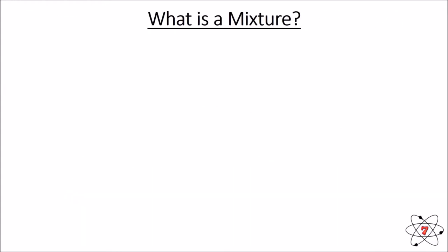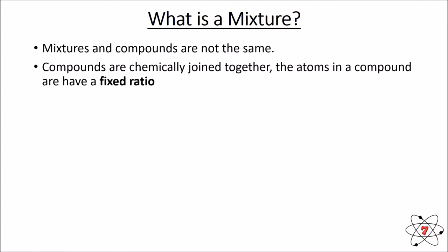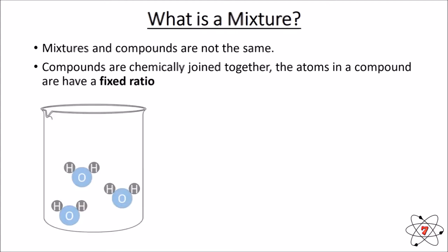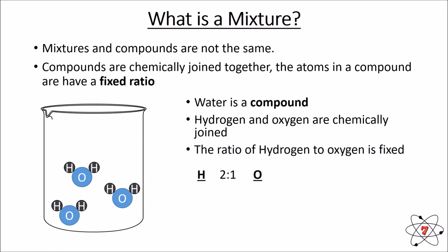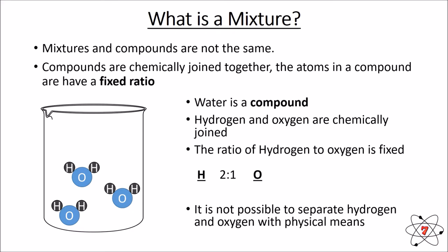First of all we need to know what a mixture is. Mixtures and compounds are not the same — compounds are substances that are chemically joined together and the atoms in a compound have a fixed ratio. We can see here we have water, H₂O. Water is a compound; the hydrogen and oxygen atoms are chemically joined together, and the ratio of hydrogen to oxygen is always two hydrogen atoms for every one oxygen atom — you cannot change that.